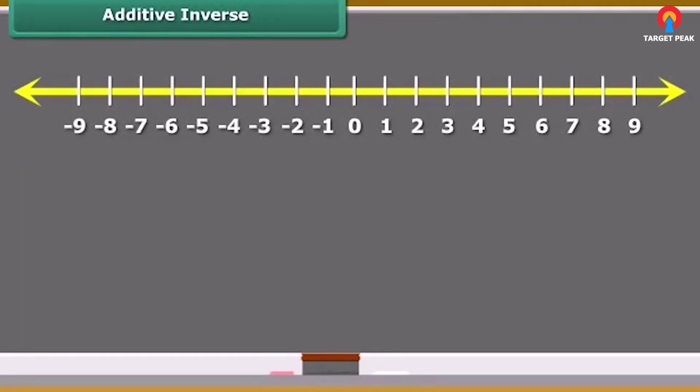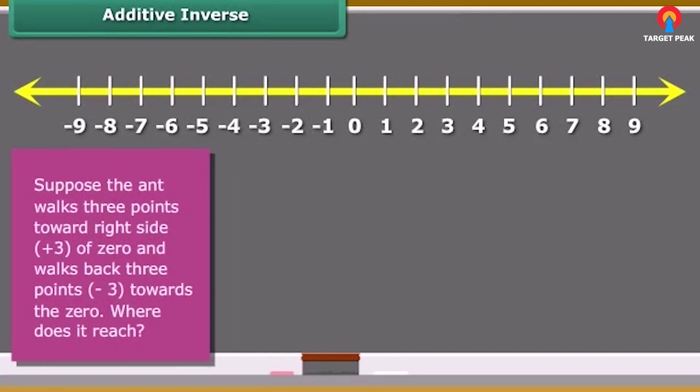Now we will learn additive inverse. Suppose the ant walks three points from zero to the right side and walks back three points. Where does it reach ultimately?